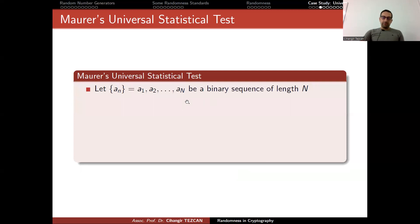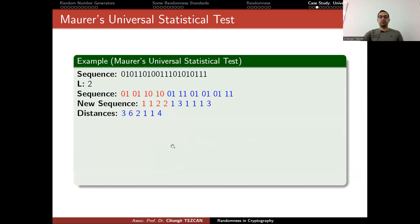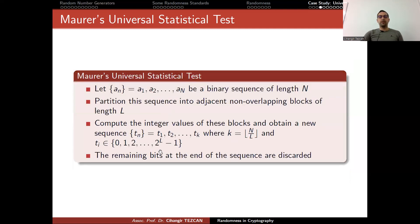Let's give a little bit more definition about it. You have the sequence a_n of n bits. It's a binary sequence of length n. You partition the sequence in adjacent non-overlapping blocks of length L. In the example, I chose L equals 2. Then you compute the integer values of these blocks and obtain a new sequence, t_i's, where K equals n divided by L. So now we turn them into integers. The remaining bits at the end of the sequence are discarded.